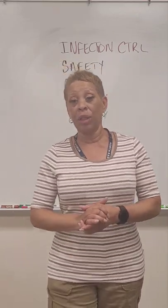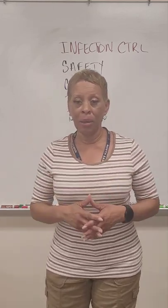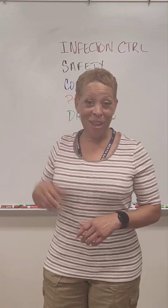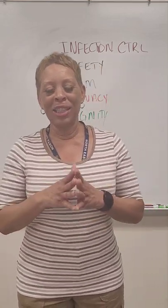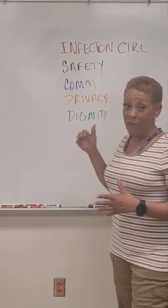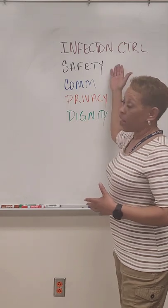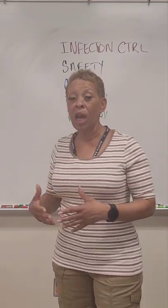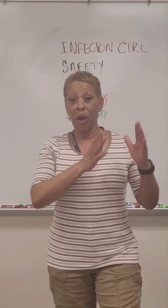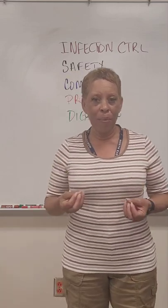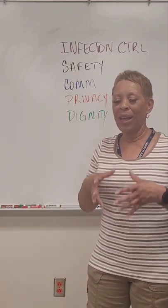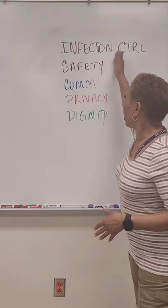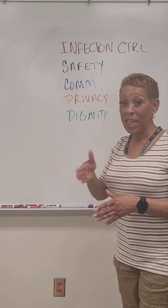I'm going to talk to you about these upcoming super clips. In this video, I'm going to share some information on the first indirect care behavior super clips. I'm sure you're well aware that there are five indirect care behaviors: infection control, safety, communication, privacy, and dignity. These indirect care skills or behaviors are going to be evaluated on from start to finish of your skills exam. So it's very important that you know exactly what the NAE — nurse aid evaluator or proctor — will be evaluating you on for each individual skill.